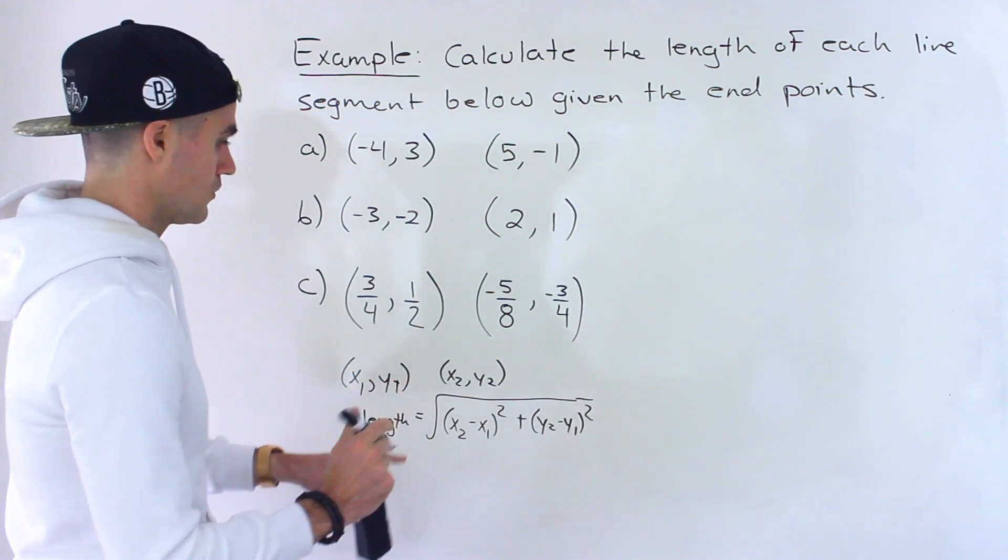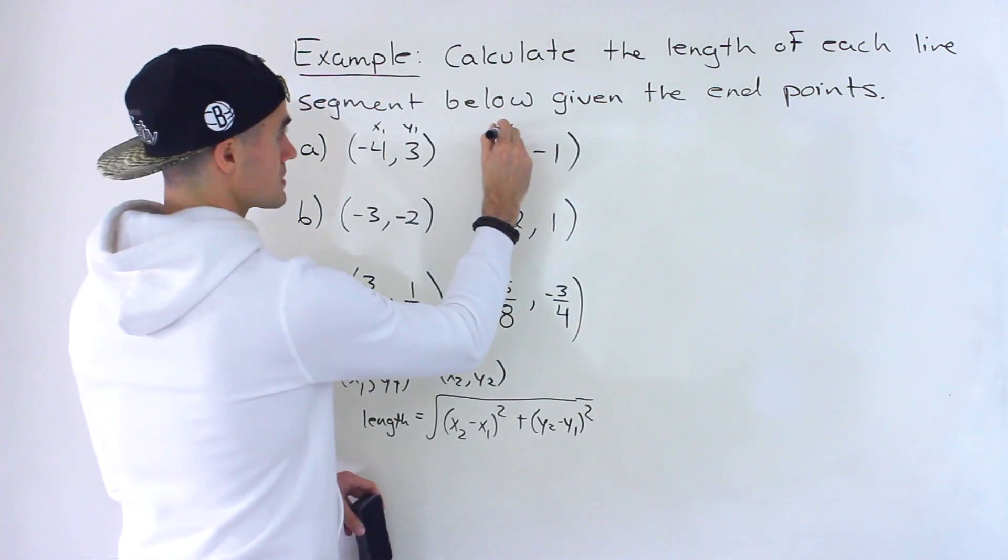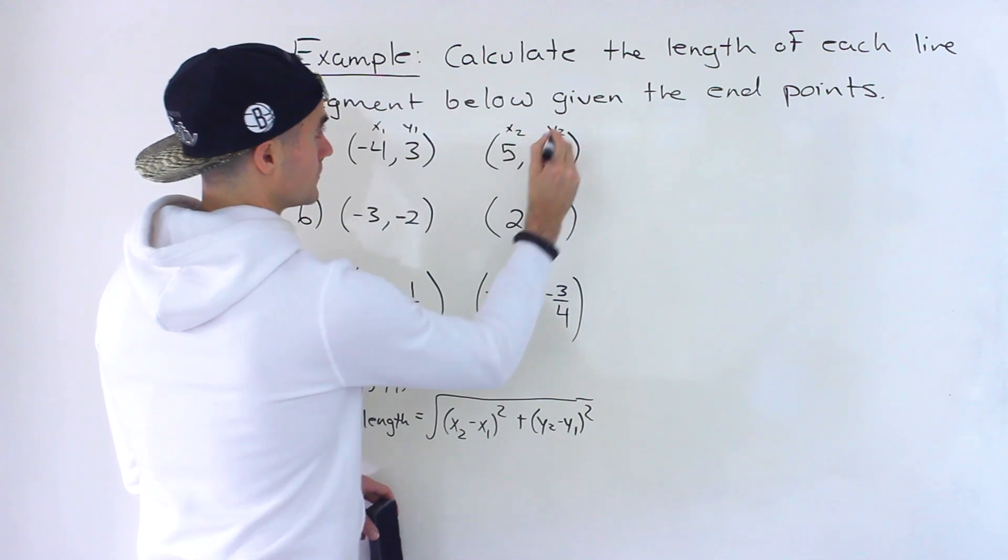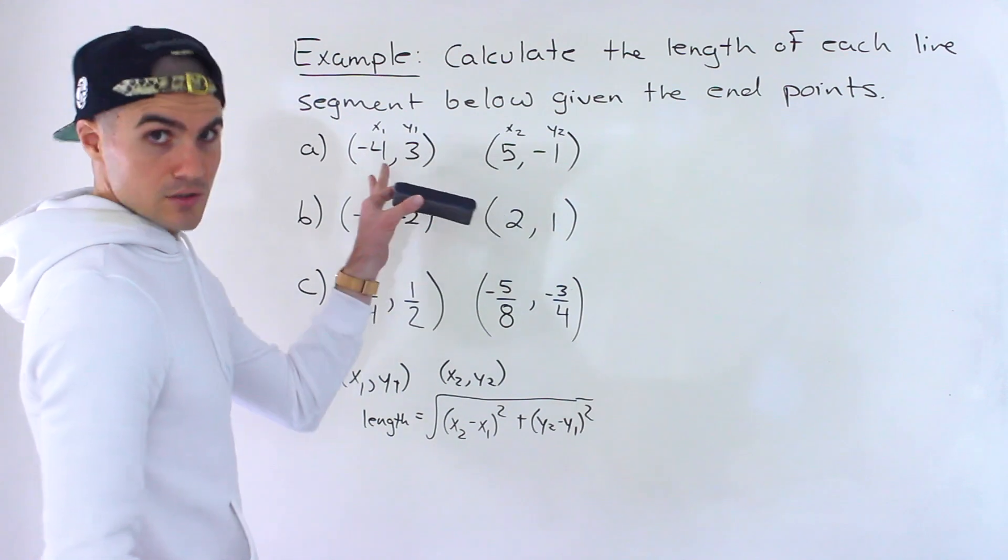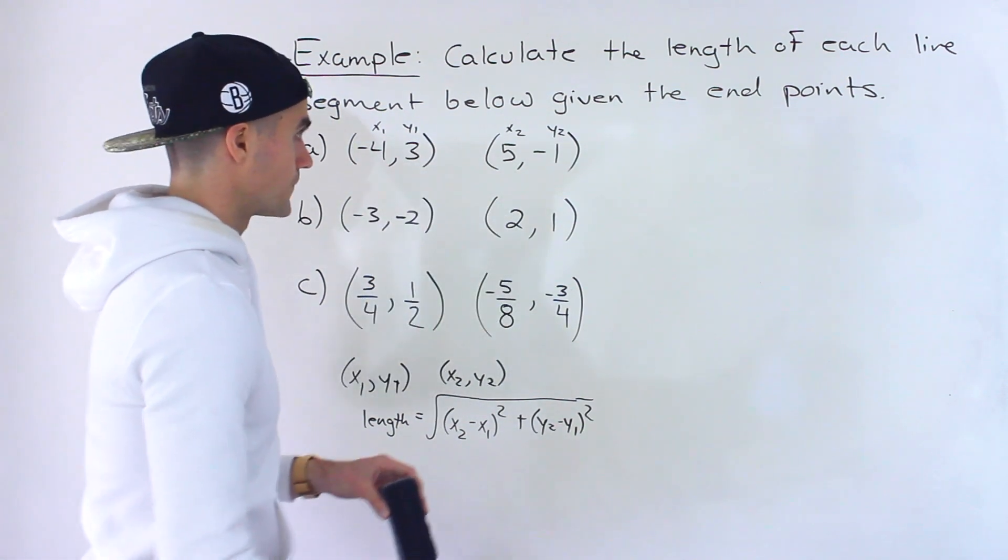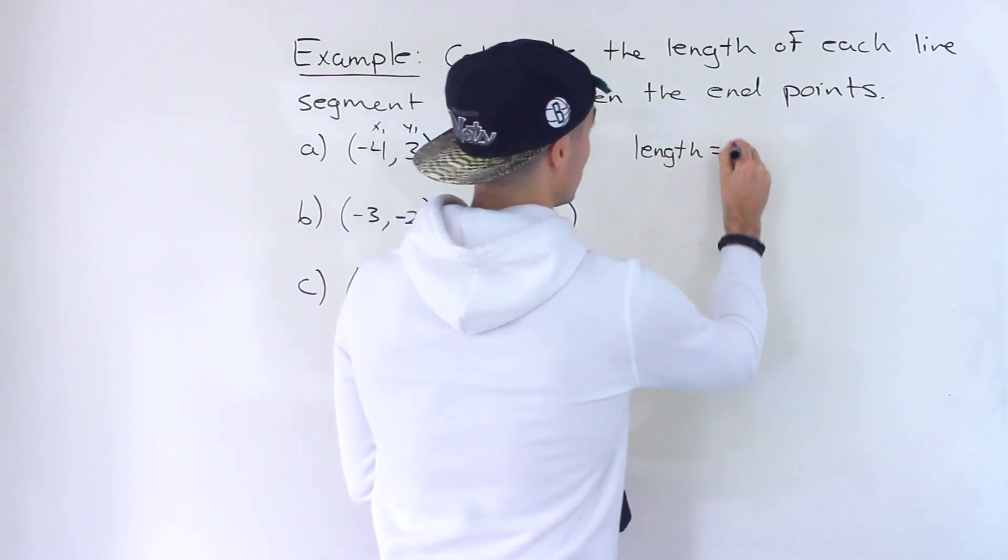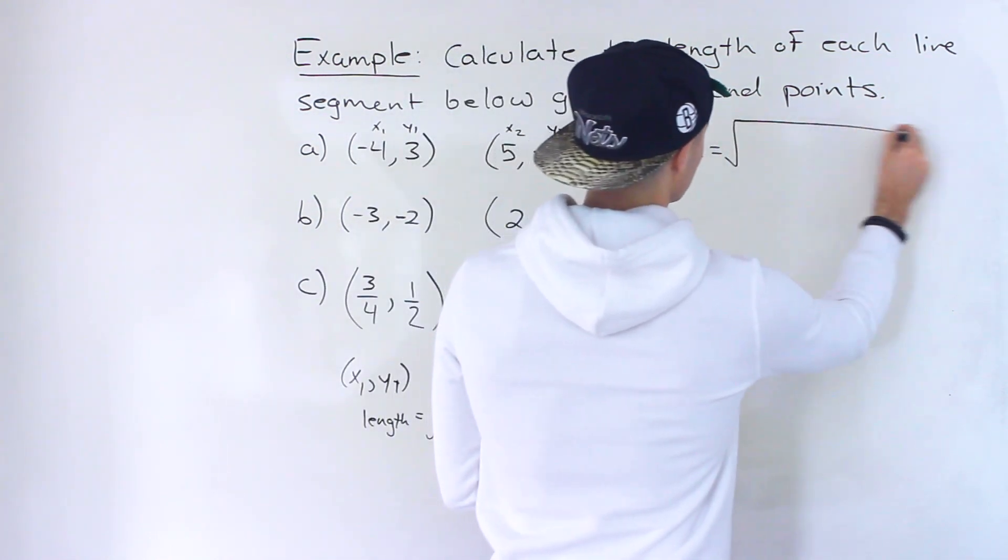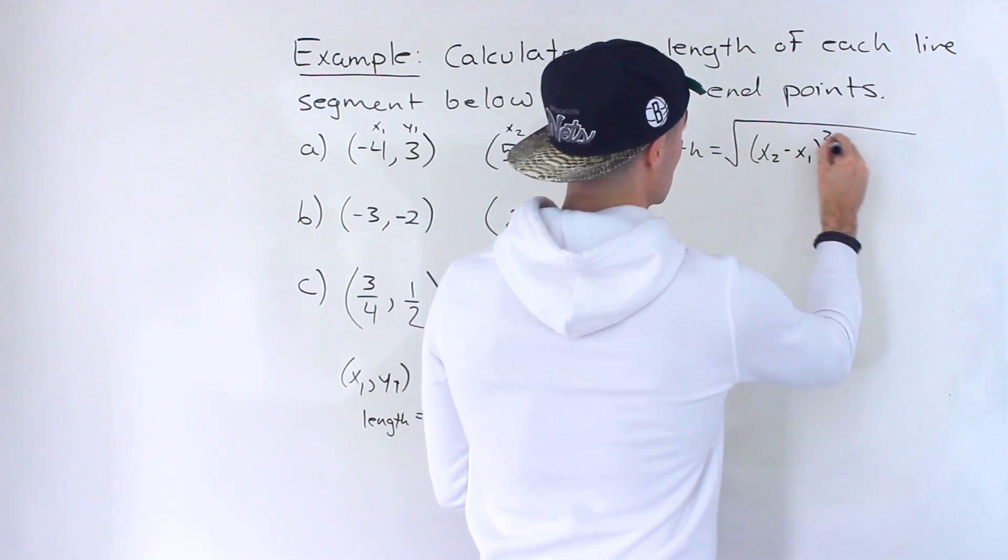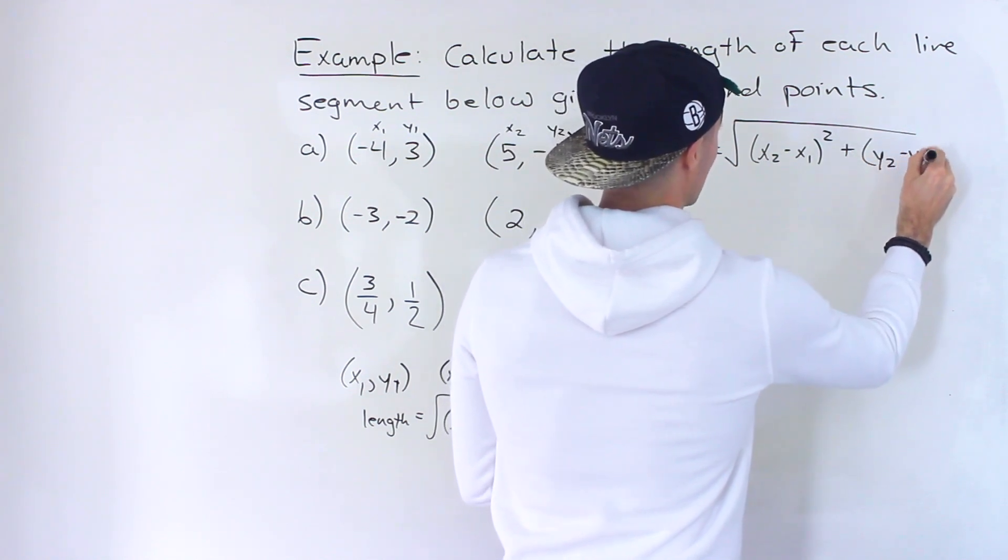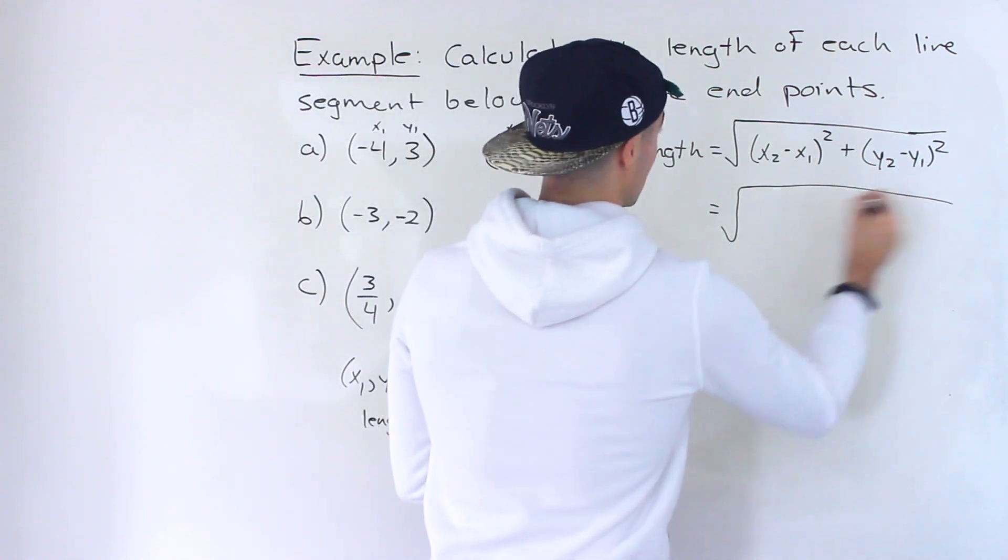And so you just got to be really careful in plugging these in and doing the algebra. So let's label these. It actually doesn't matter whether you label this x1, y1, or x2, y2. You're still going to get the same answer in the end. So let's rewrite the formula over here. So we'll have the square root of x2 minus x1 squared plus y2 minus y1 squared. So let's plug everything in here.